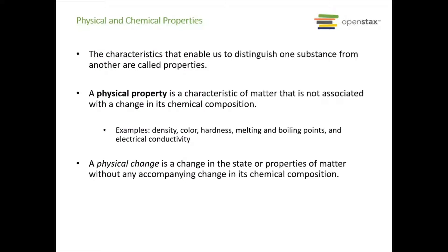Properties are the characteristics that enable us to distinguish one substance from another. A physical property is a characteristic of matter that has nothing to do with its chemical composition. Some examples are density, color, hardness, the temperature at which it melts or boils, and its electrical conductivity. A physical change is a change in the state or properties of matter that does not change its chemical composition.